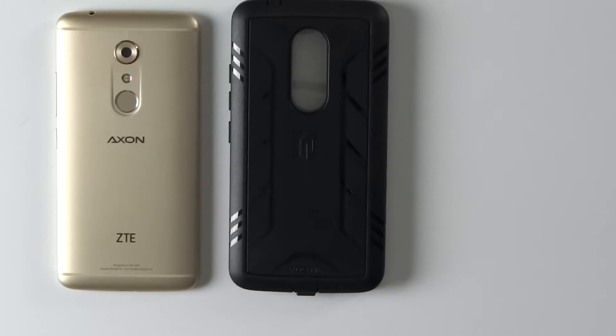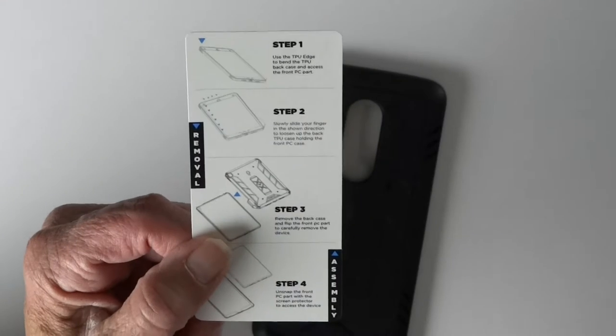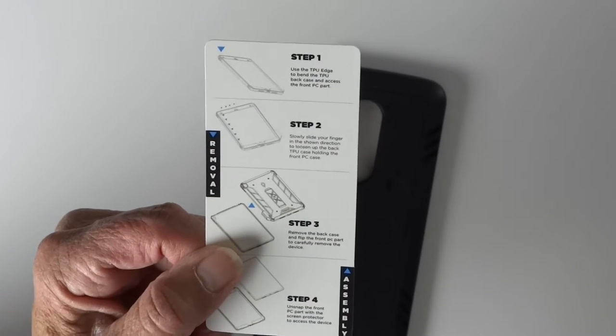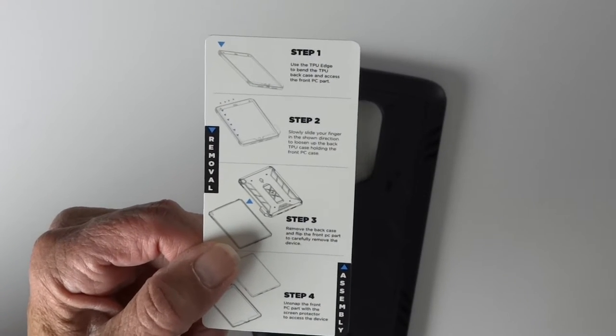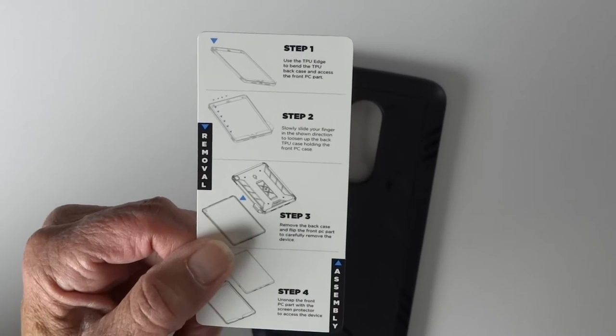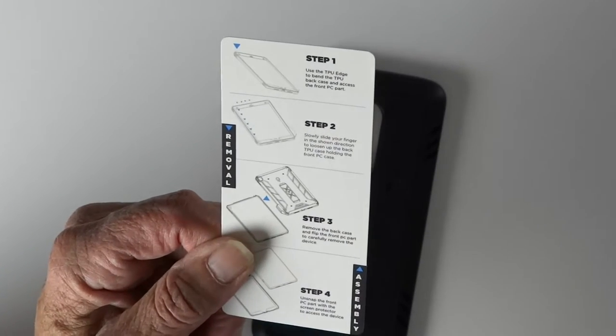So the case is a kind of rugged, very protective case for the Axon 7. It comes with a little card to show you how to get the top part of the case separated from the bottom. And believe me, that's the hardest part.